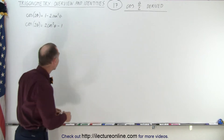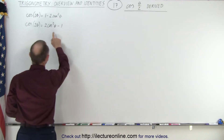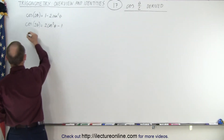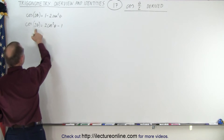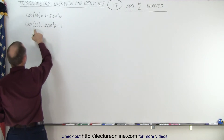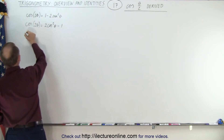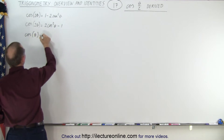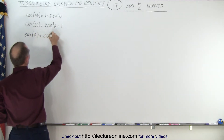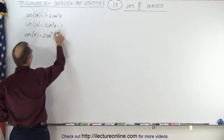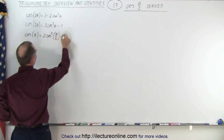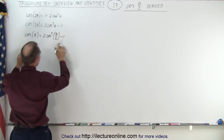Because notice here, when we change this equation and divide the angles by 2 in both cases, this becomes the cosine of theta, which is equal to 2 times the cosine squared of theta divided by 2, minus 1. That's still valid.